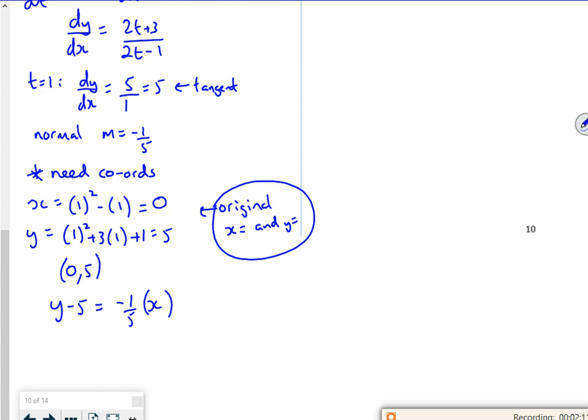But then it says, find where the normal intersects the curve again. Right, so it's probably easier to rearrange a bit, so we need to sub these back into the equation.